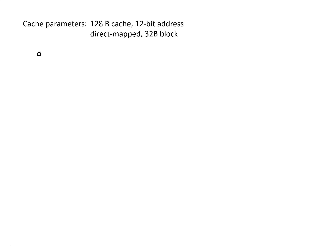For the number of offset bits, that's based off of the number of bytes in a block. We take log base 2 of the number of bytes in a block, and we find that's equal to 5, so we need 5 bits for the offset.